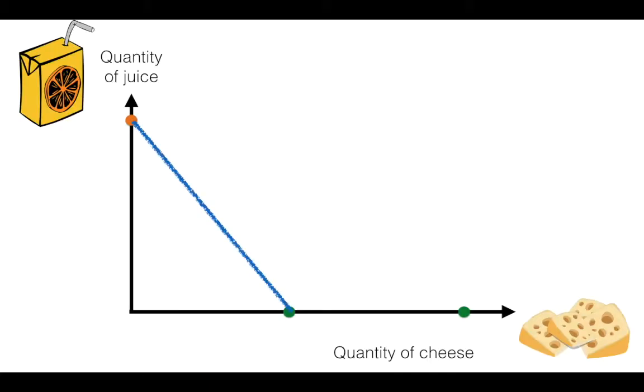Once again we're looking at two goods, cheese and juice. Let's put in our initial budget line and indifference curve. Point A represents the combination that provides us maximum utility given the budget constraint. The current consumption of cheese is X.